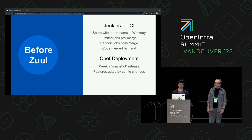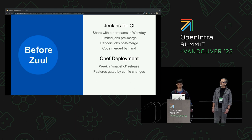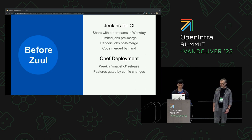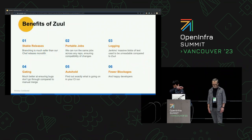We had limited jobs pre-merge — basically a couple of tests just to check a single patch. We relied on periodic jobs entirely for post-merge to catch any regressions. The main part of this resulted in all code being merged by hand. It didn't matter when you got a plus one from your CI or a plus two on your review — as long as you got it at some point, you could merge. So if someone reviewed your code on Friday, you could merge on Monday and just pray that it works. We also used Chef for deployment — weekly point-in-time snapshots of Chef changes across multiple Workday teams including our own. When we had to roll out changes, we'd roll out everyone's changes at once, including Workday infrastructure changes. Feature and bug fix rollout was gated by config changes, and we didn't have any stable release branches.